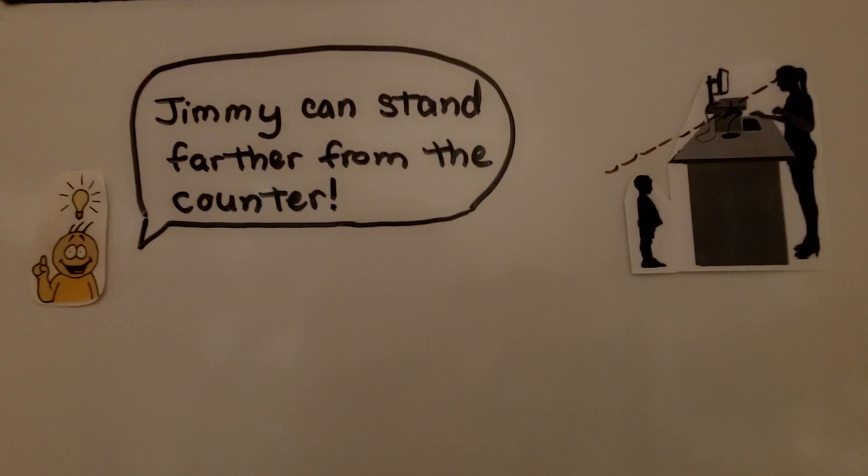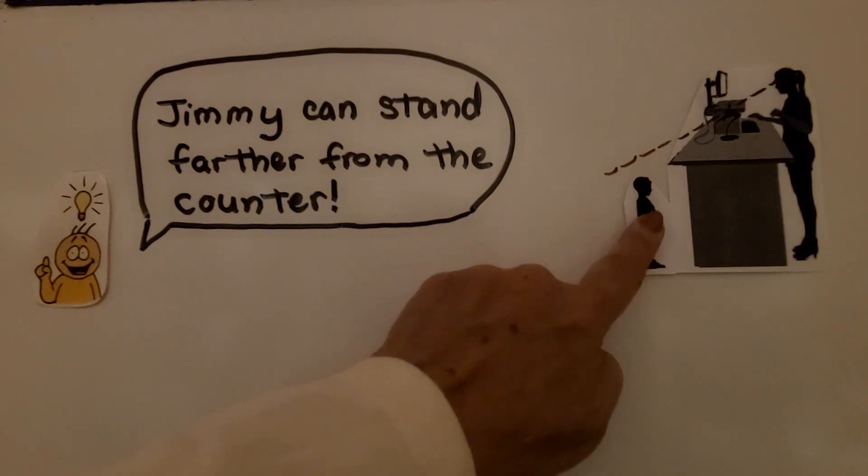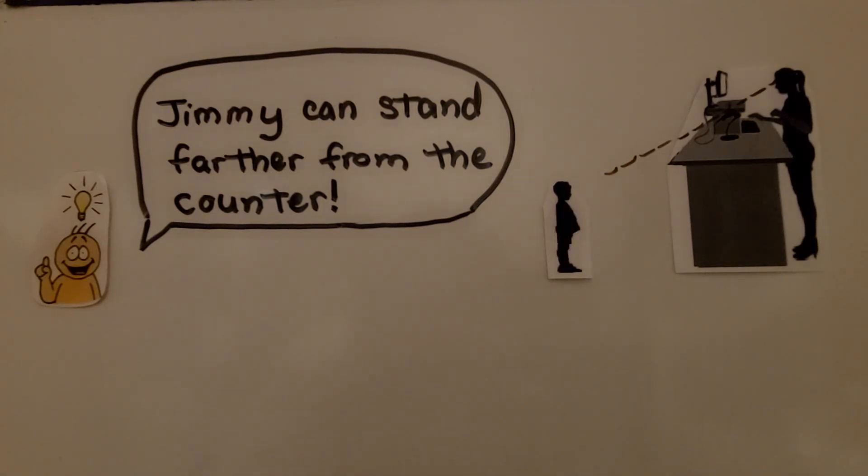It's unlikely that a clerk would be 10 feet 8 inches tall to see little Jimmy. But little Jimmy is awfully close to the counter. If he were to move back, well, she'd see him easily. Jimmy just can stand farther from the counter. But if he did that, we wouldn't have a math problem for this video.